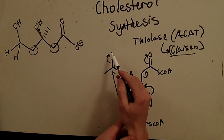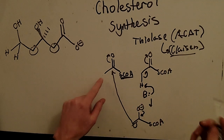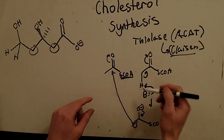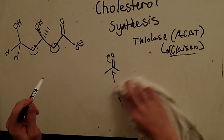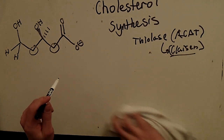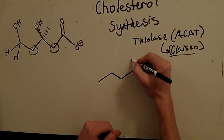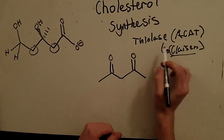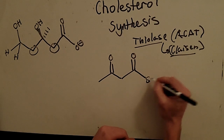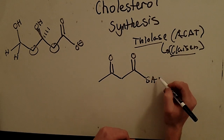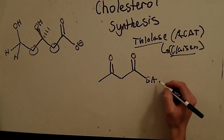You form the tetrahedral intermediate, then the collapse of the intermediate causes the leaving group to leave, and you reform the carbonyl. We have a condensation of two ester groups — in this case thioesters — which is what the thiolase does. That's what a Claisen reaction is: a condensation of esters.